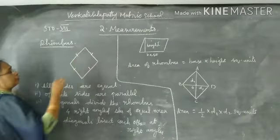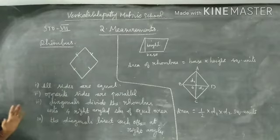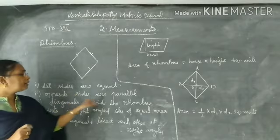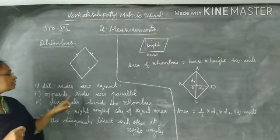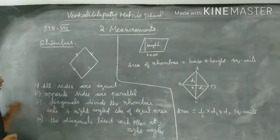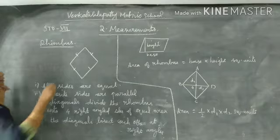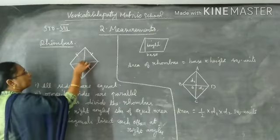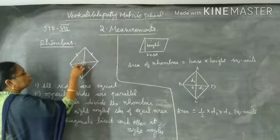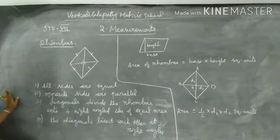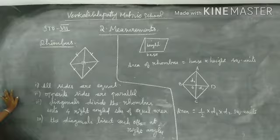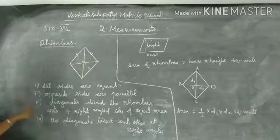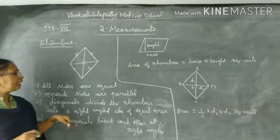Opposite sides are parallel. Next, diagonals divide rhombus into four right angle triangles. Diagonals bisect. How many triangles? Four - one, two, three, four right angle triangles. Diagonals bisect, triangles of equal area.